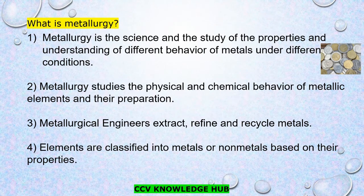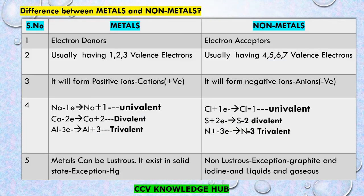Elements are classified into metals or non-metals based on their properties. Now let's move on to the differences between metals and non-metals. Metals are electron donors because they readily lose one or two electrons when supplied with energy. Non-metals are electron acceptors because they readily gain one or two electrons when supplied with energy.